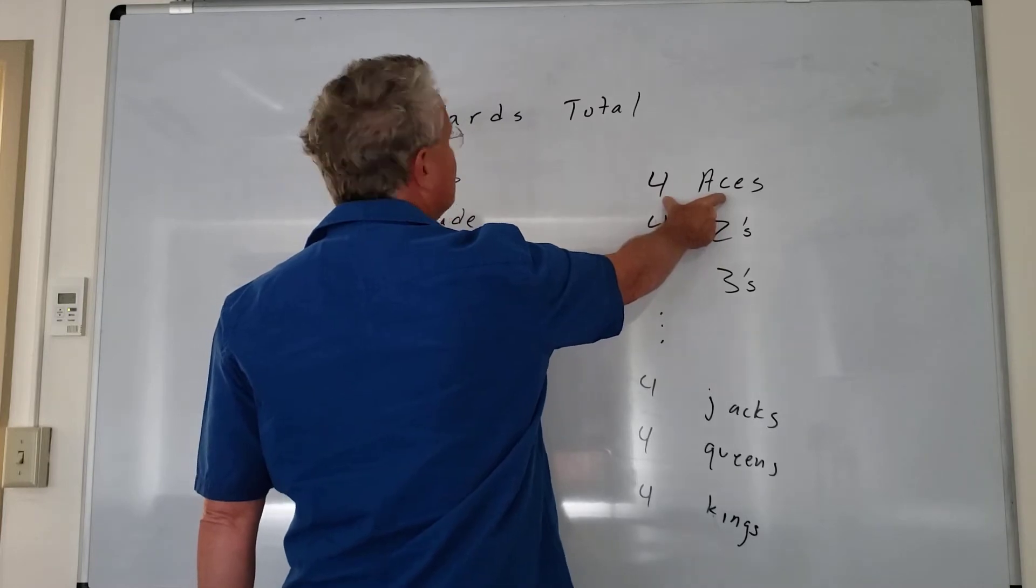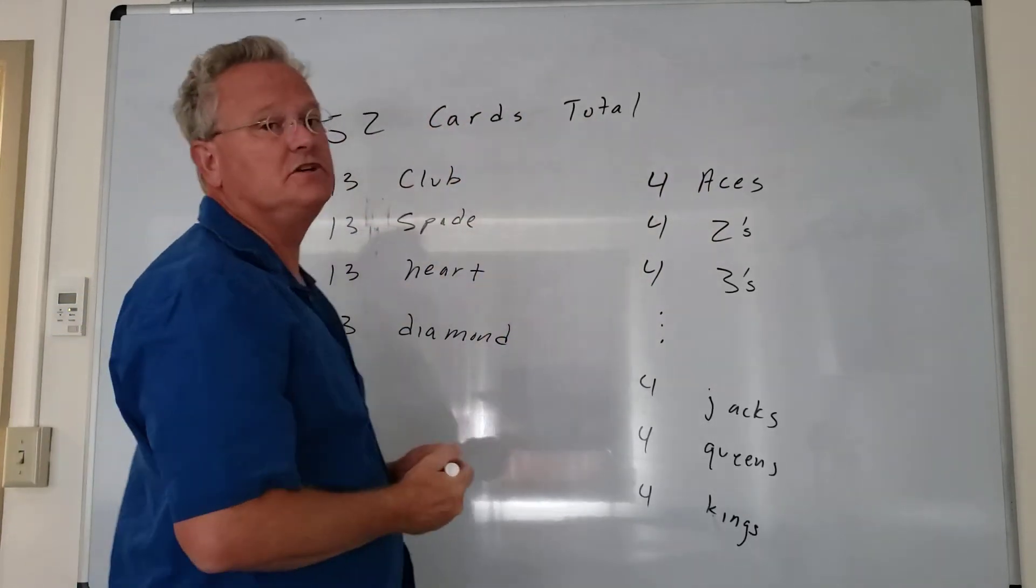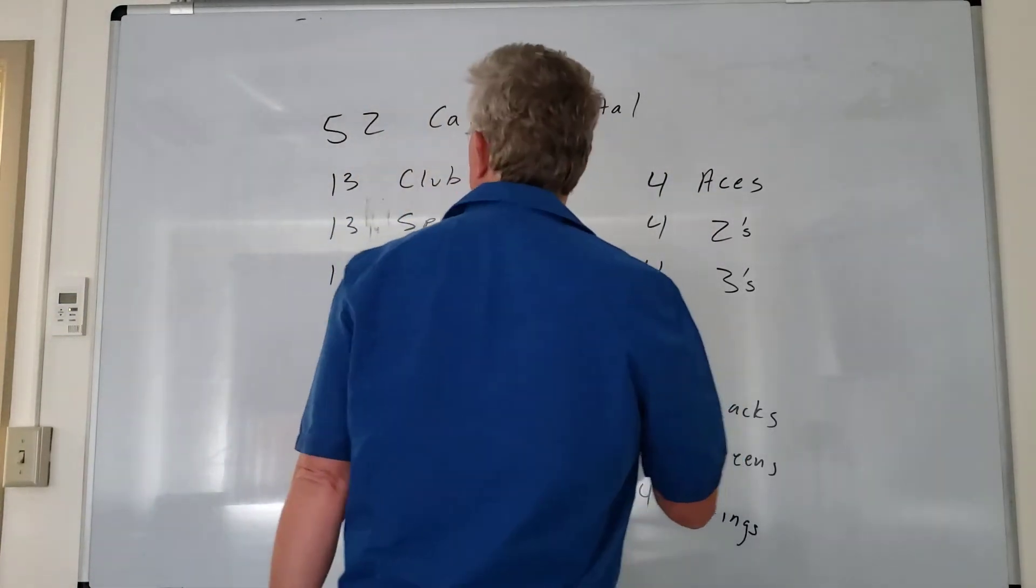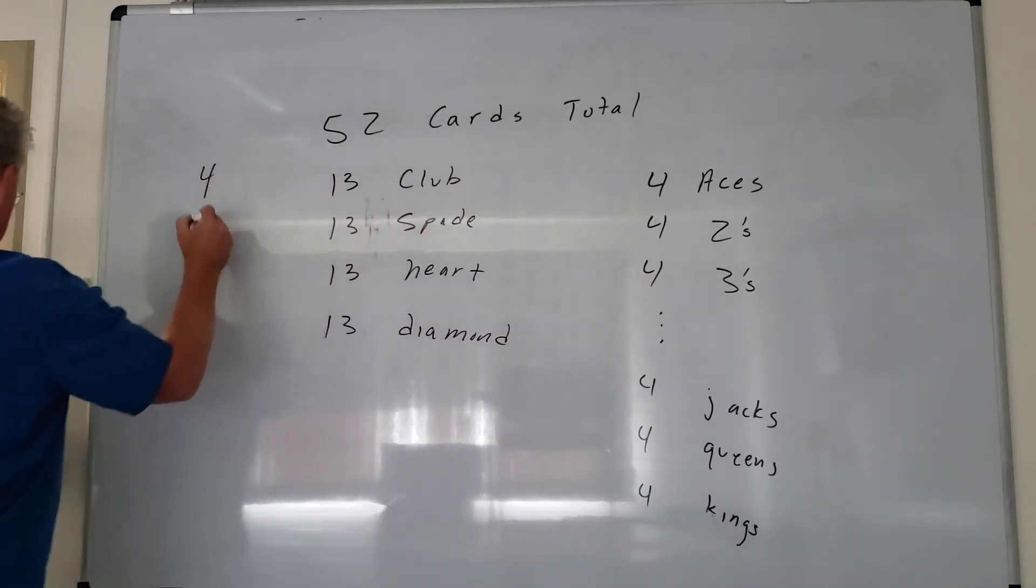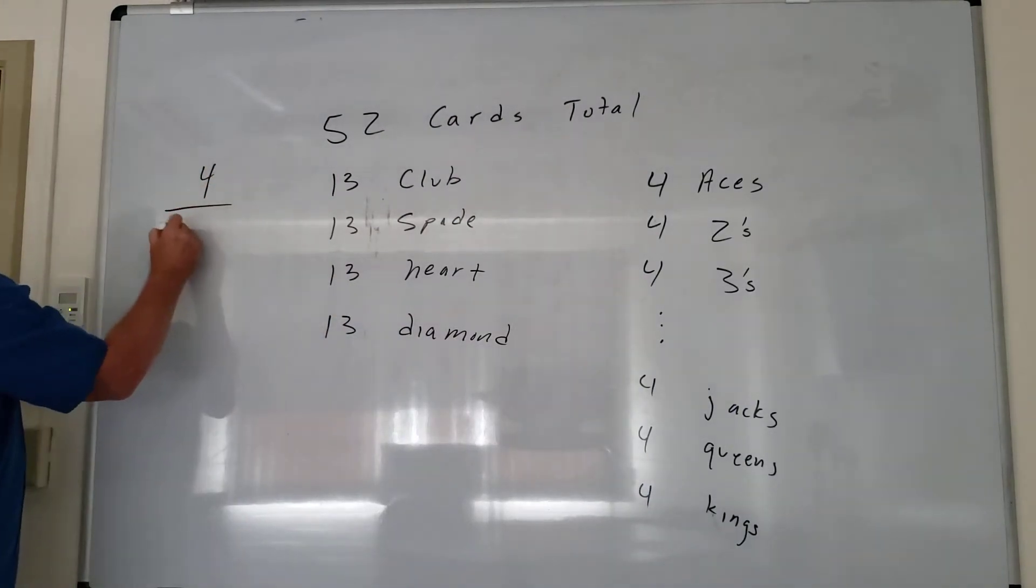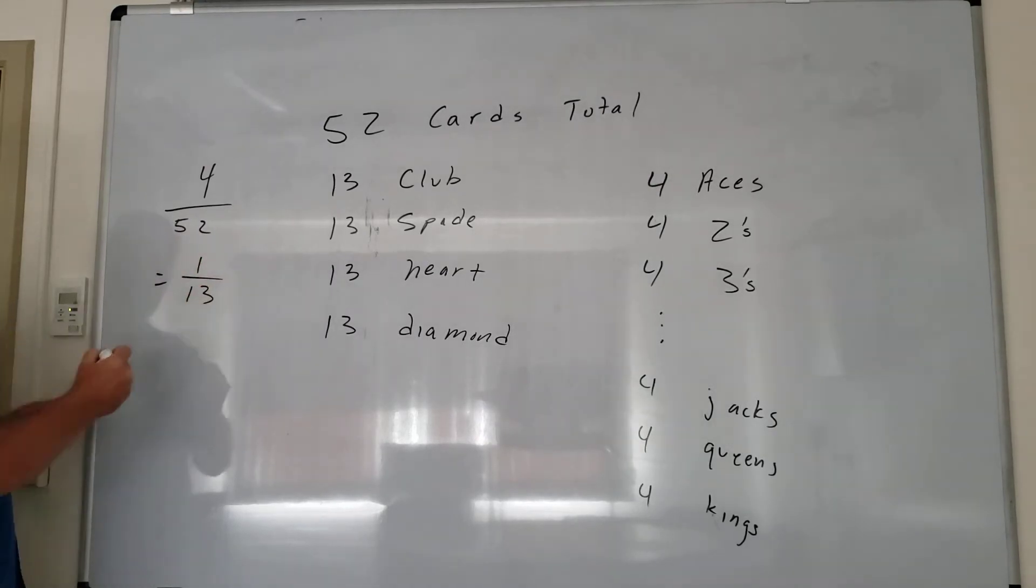There are four aces out of a total of 52 cards. So the probability is 4 out of 52, and this reduces to 1 out of 13.